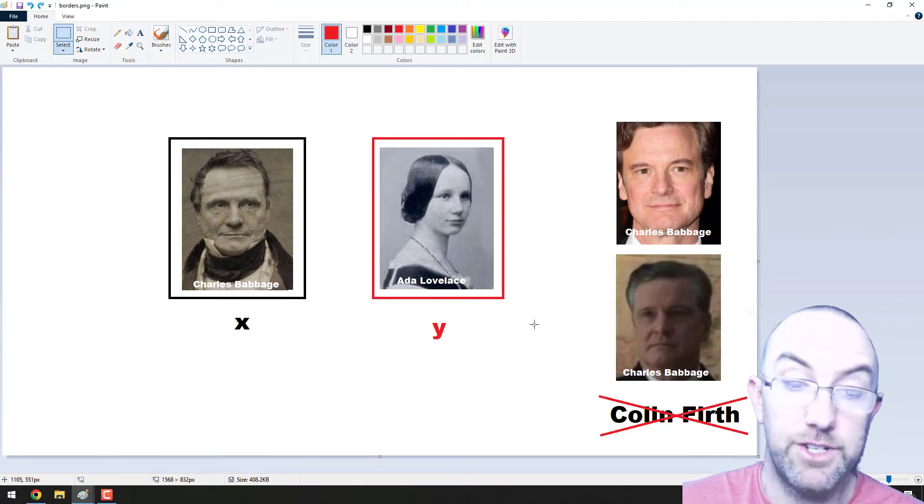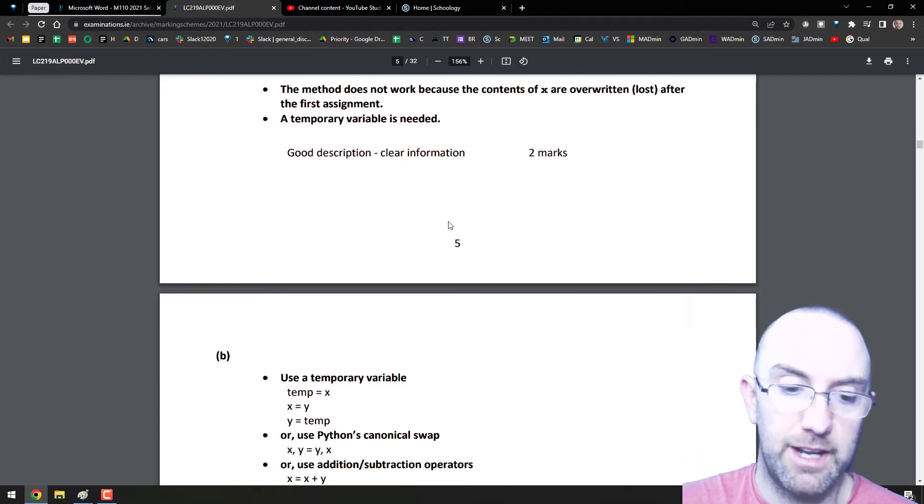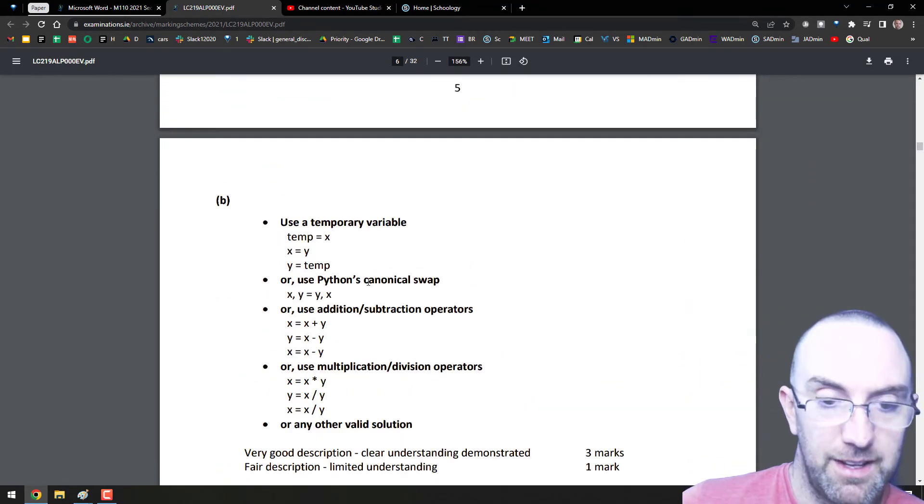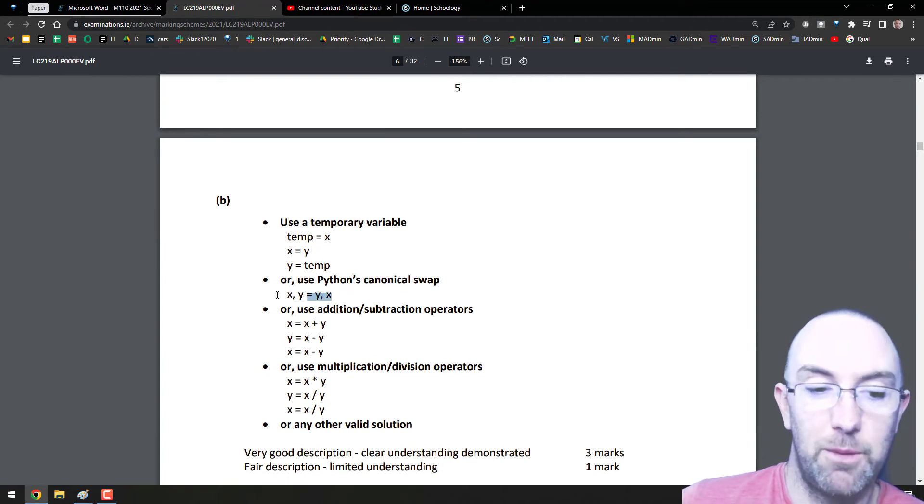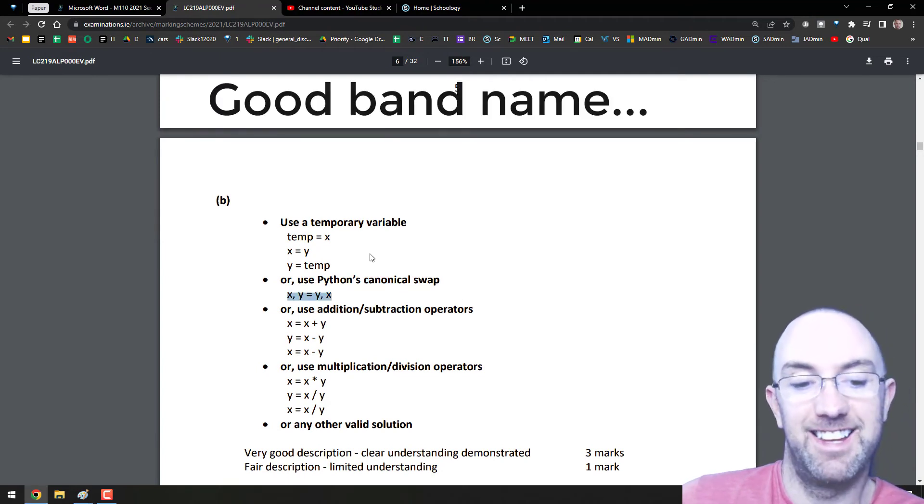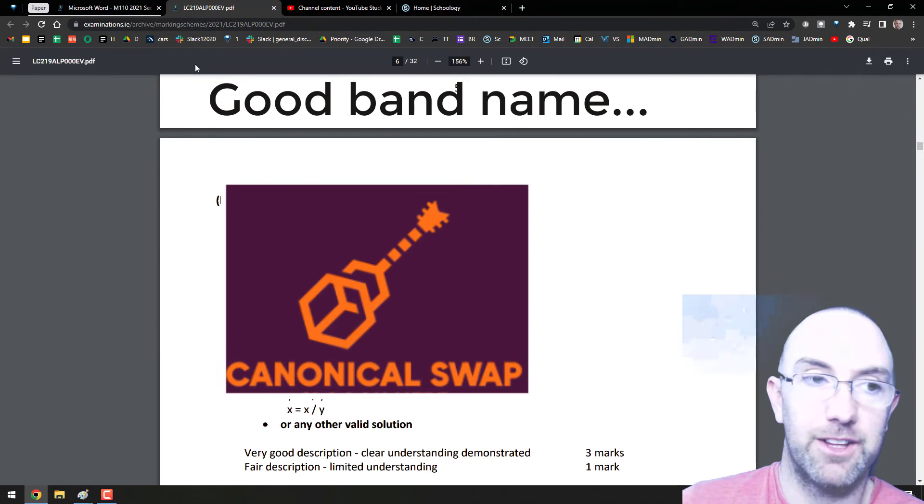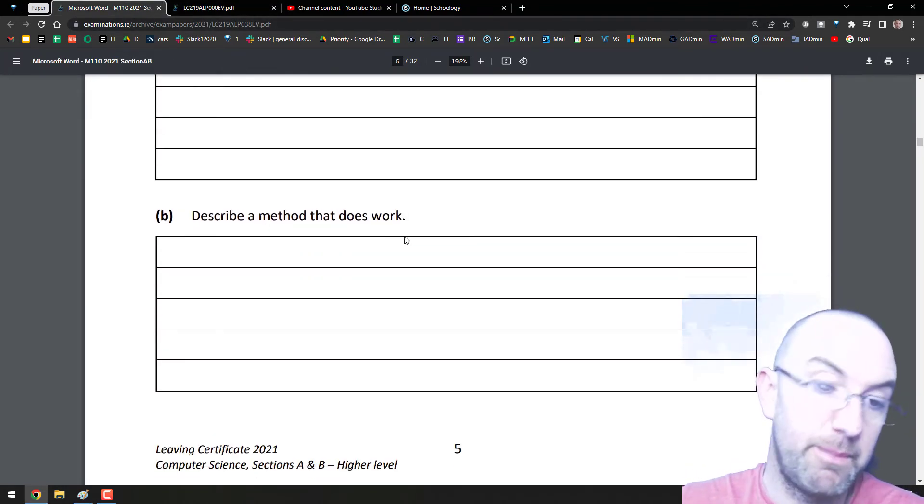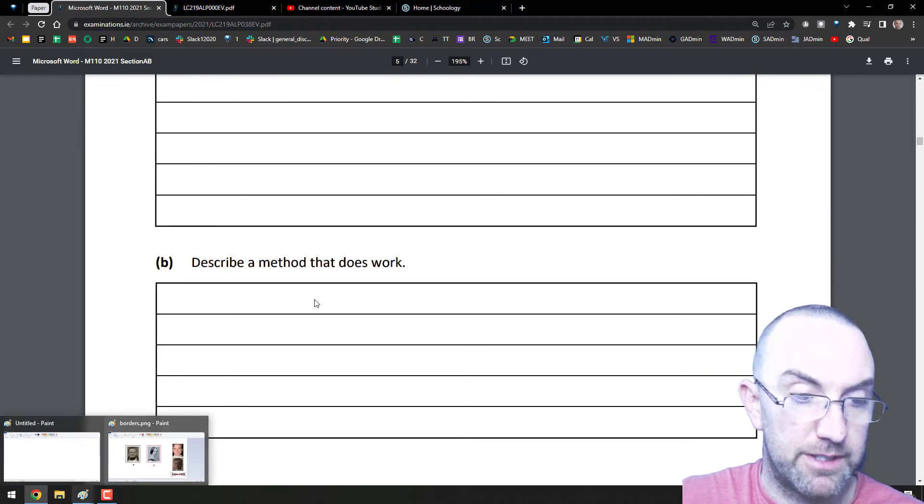You can do that in Python as well. Actually, just to get on to the next bit here, this is one of these cool, you know, why is Python a good programming language? It has some nice little things. Here it is: canonical swap. What a cool name, canonical swap.